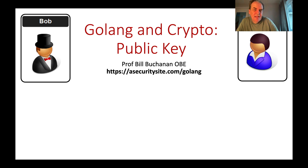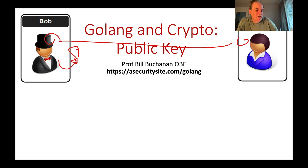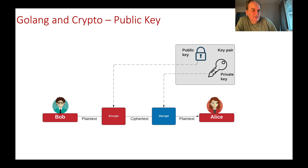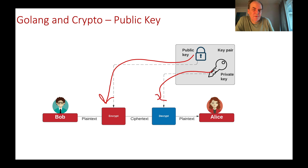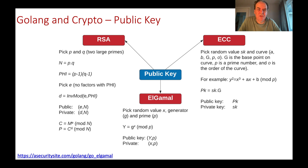Now let's look at public key encryption. It's often used to prove identity — Bob to Alice and vice versa — and to prove that Bob signed a message. The basics: a special mathematical method creates a key pair, a public key and a private key, that work together. We can encrypt with one key and decrypt with the other. Unlike symmetric key encryption where the same key is used, here we use two different keys. This allows Bob to send Alice an encrypted message by encrypting with her public key, which only her private key can decrypt.